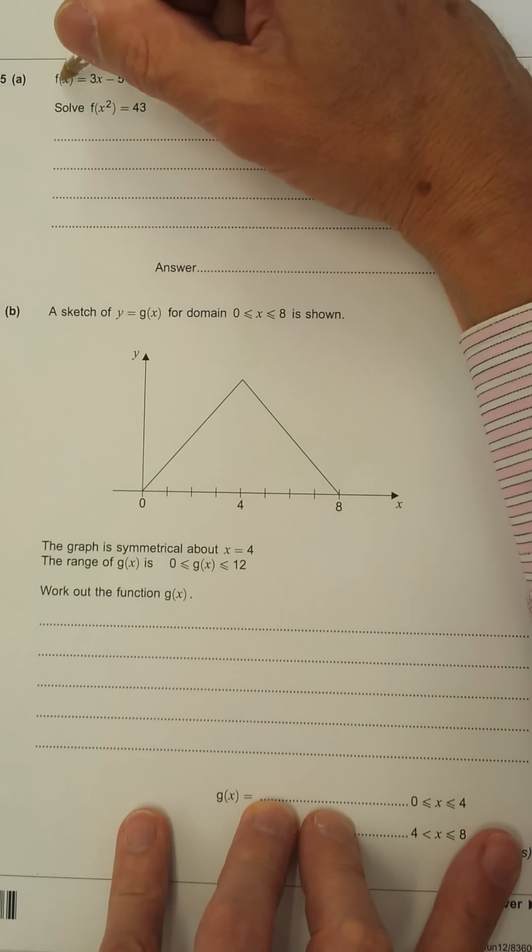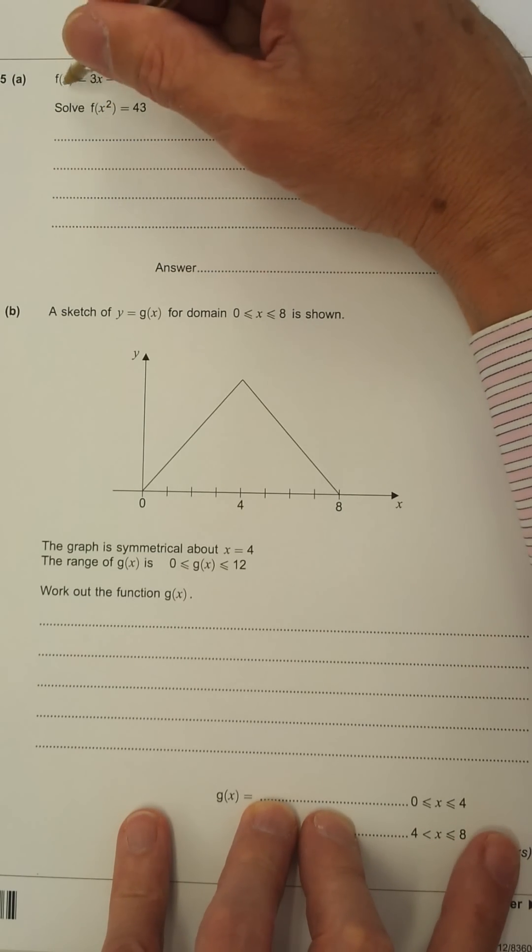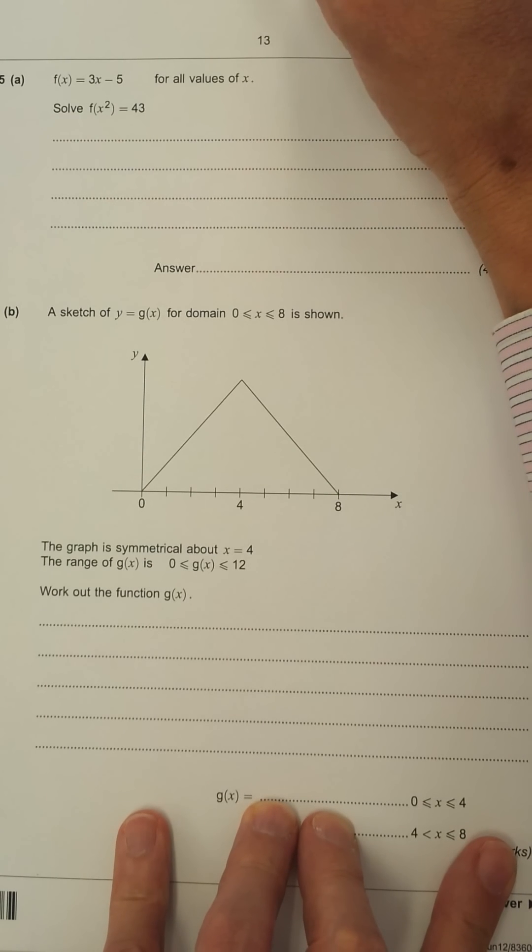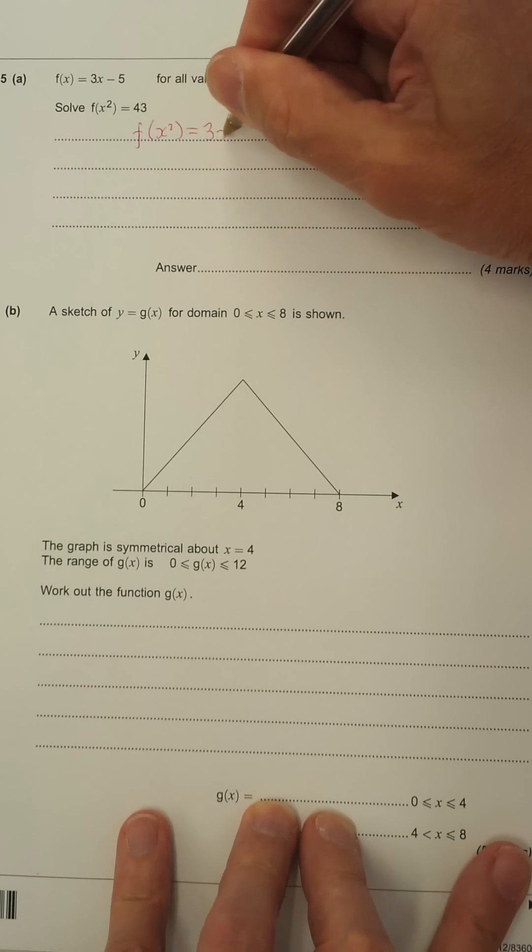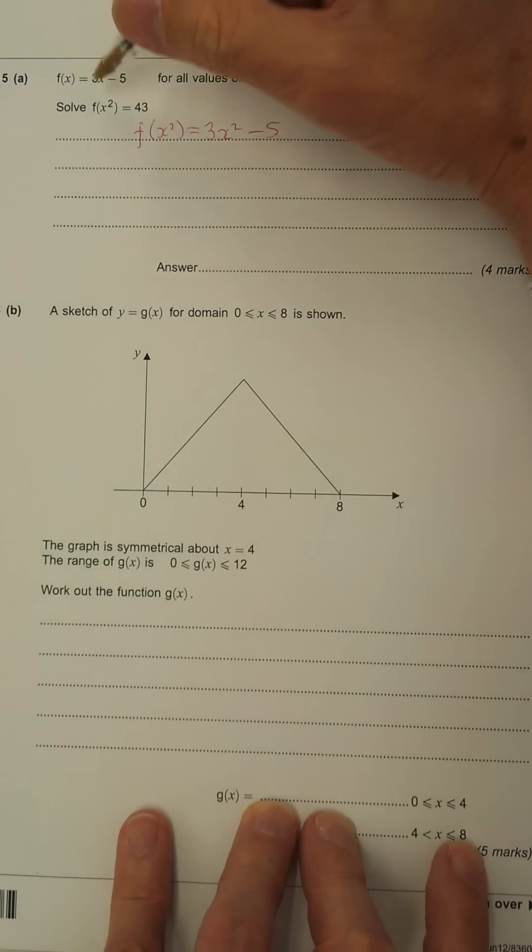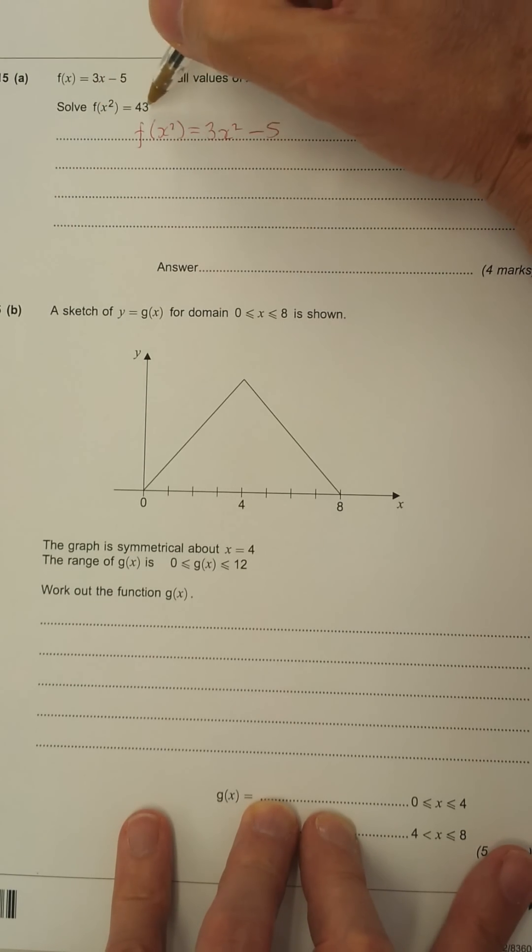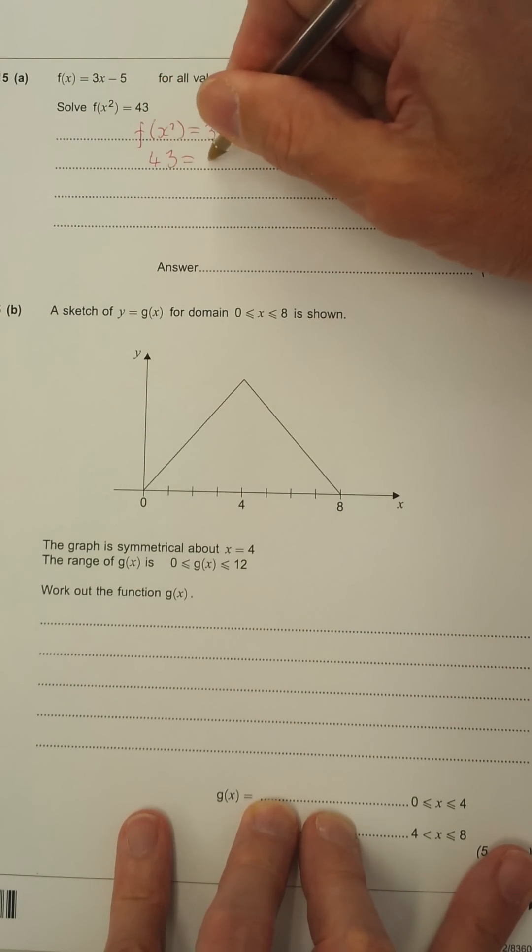So that means we've got x here, we've got x squared here. All we need to do is replace the x with x squared. So we get f of x squared equals 3x squared minus 5. All I've done is replace the x with the x squared. And we're told that f of x squared is 43. So put that in. 43 equals 3x squared minus 5.